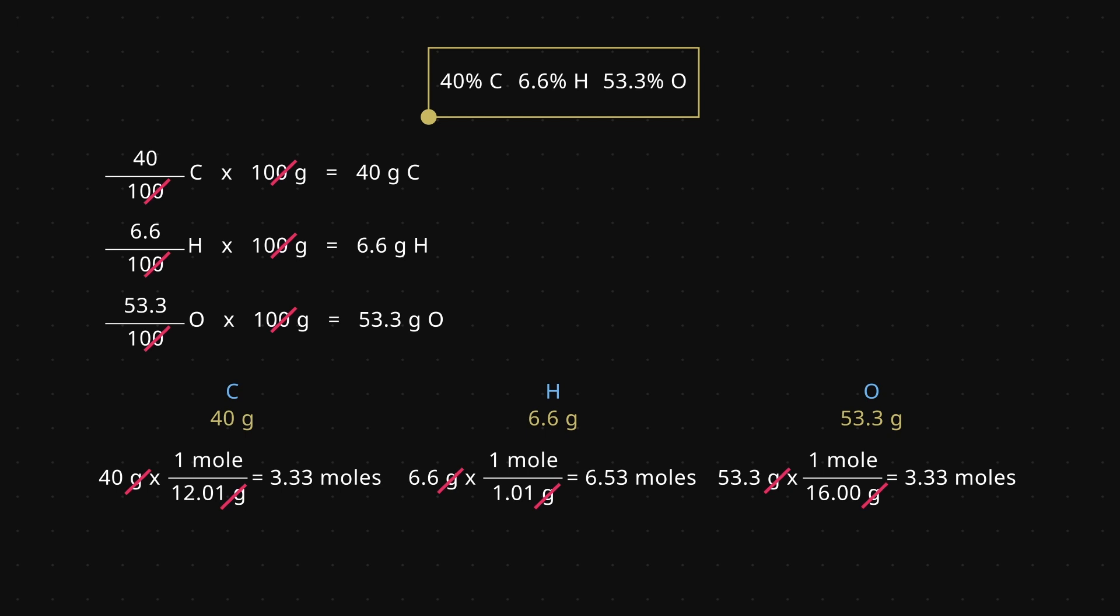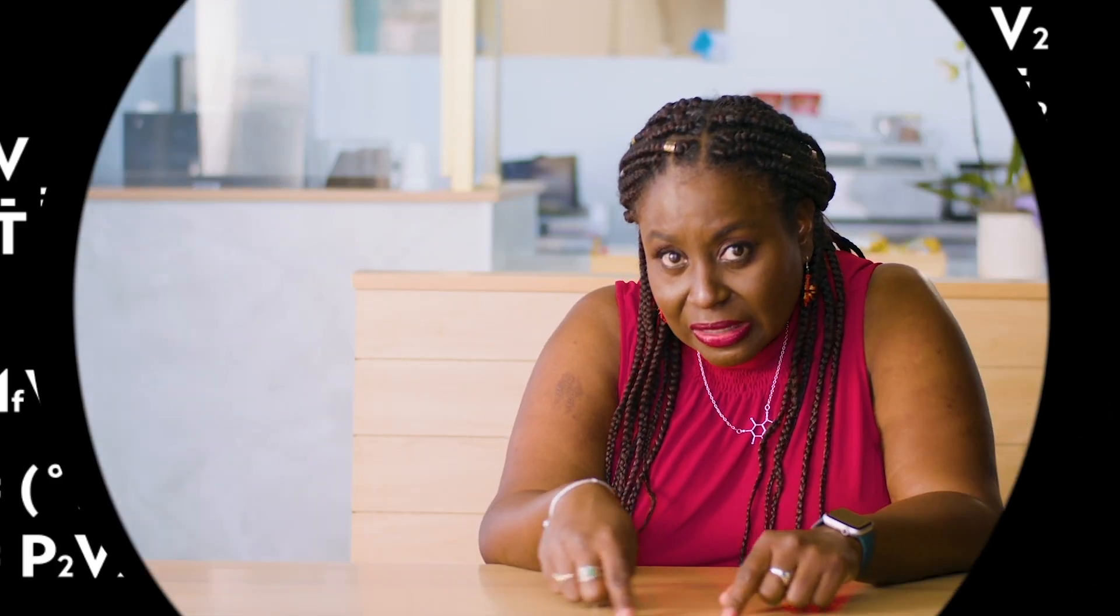The molecular formula is related to the ratio of these different types of atoms. To get these ratios, let's divide by the smallest amount of moles, 3.33.